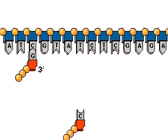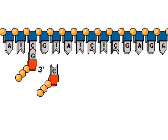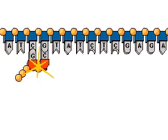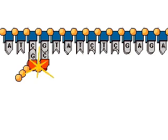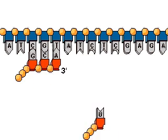Another ribonucleotide is added to the three prime end of the first ribonucleotide. Hydrogen bonds the base of the ribonucleotide to its complementary base on the DNA strand. The outer two phosphate groups split off and phosphodiester bonds form between the three prime position of the first sugar and the five prime position of the second. The new RNA strand continues to grow at its three prime end.